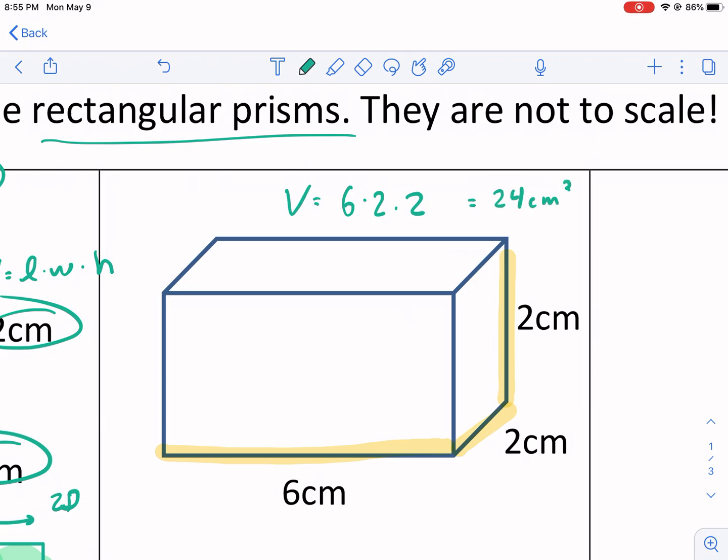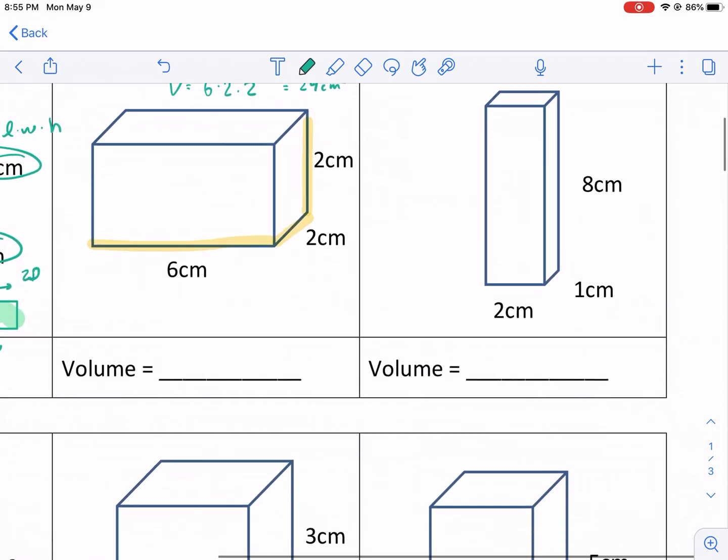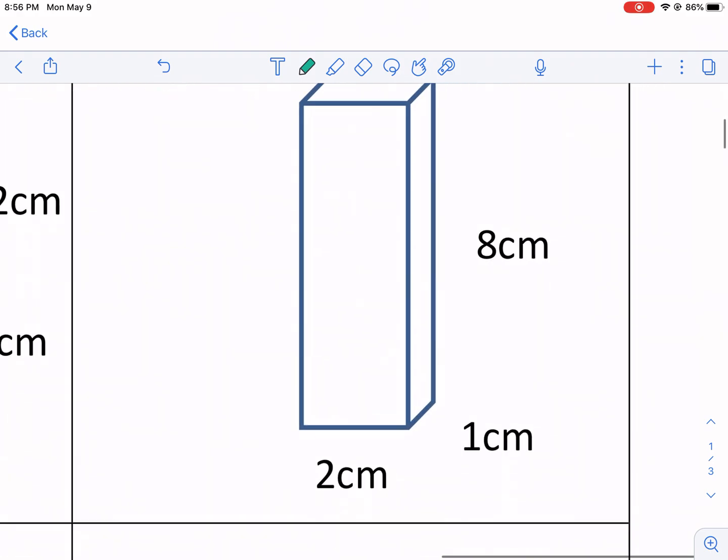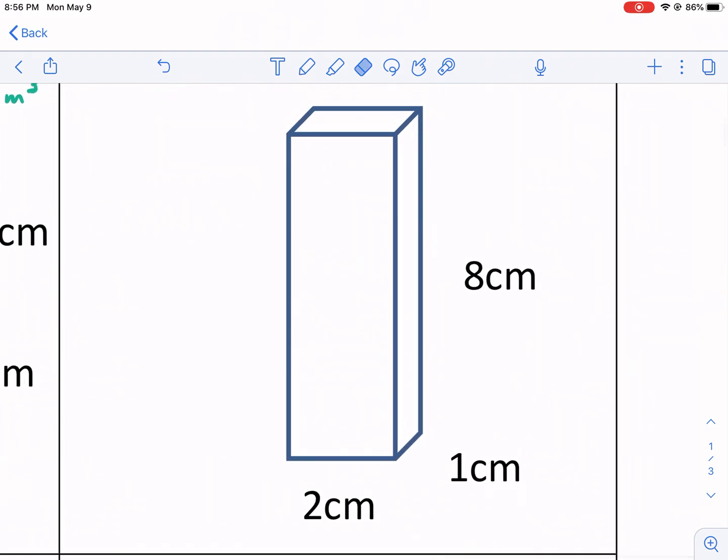Again, that's centimeters cubed. All of these are going to be very similar. For this one, the base is actually pretty far away from each other. We could call that a base. Then this one right here would be a base. Then our height would be a long distance of 8 in between, just to give you an idea of what a prism is. But again, the formula is exactly the same.